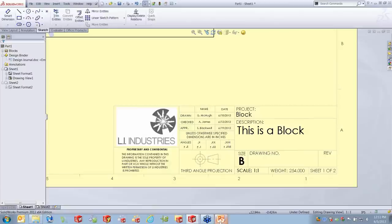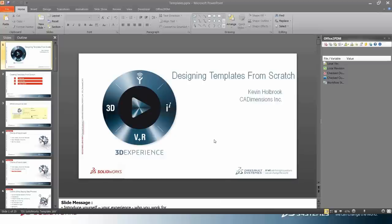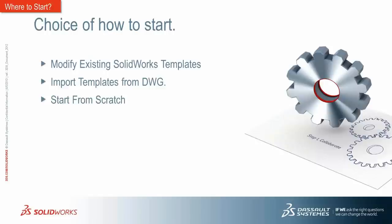But how do we start this from scratch? We don't have to start from scratch — we have three main choices inside of SOLIDWORKS. I can take the SOLIDWORKS templates and perform some modifications on them, which many of you have probably done. I can import templates using a DWG format, making sure I've followed the rules for importing to the sheet format — I see a lot of problems with that. Or, as we're talking about today, we can start from scratch.